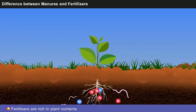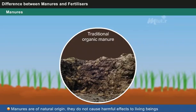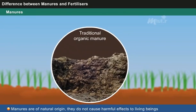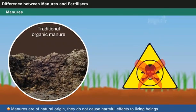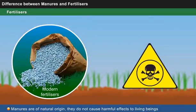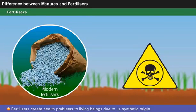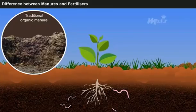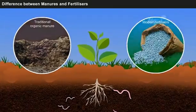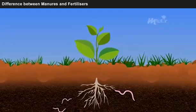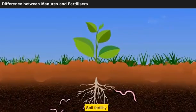Whereas fertilizers are rich in plant nutrients. Since manures are of natural origin, they do not cause harmful effects to living beings, while fertilizers create health problems to living beings due to their synthetic origin. Both manures and fertilizers are essential for maintaining the soil fertility.